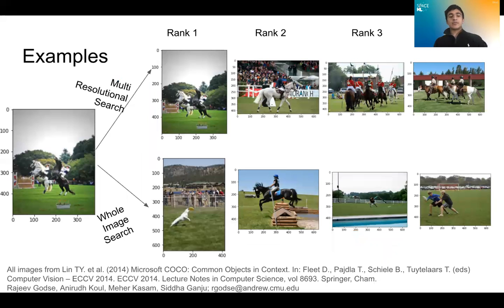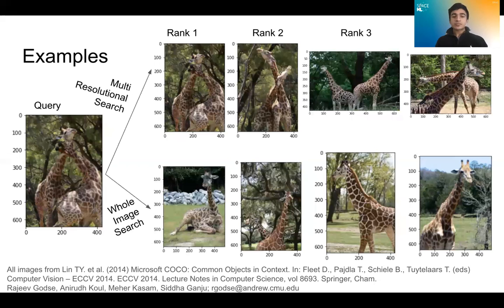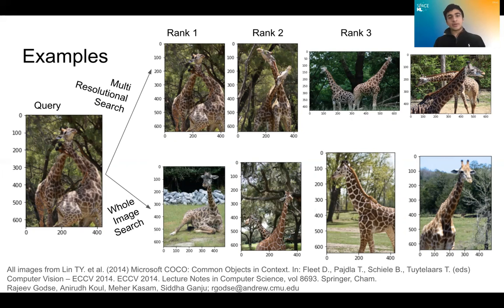To see just how powerful that is, you can look at examples of differences between the two pipelines. We are better able to identify individual objects in the image, as opposed to matching the whole image. With multi-resolutional search, we find people, horses, and fields, whereas whole-image search just finds similar-looking images. Moreover, we improved on the problem of dual counting — multi-resolutional search always matched two giraffes to a query of two giraffes, instead of just finding any image containing giraffes.